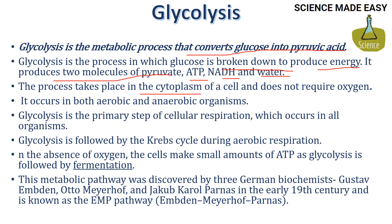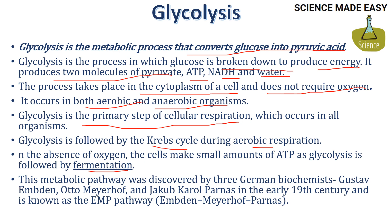The process takes place in the cytoplasm of the cell and does not require oxygen, and hence it occurs in both aerobic as well as anaerobic organisms. Glycolysis is the primary step of cellular respiration which occurs in all organisms. It is followed by the Krebs cycle during aerobic respiration and followed by fermentation during anaerobic respiration.